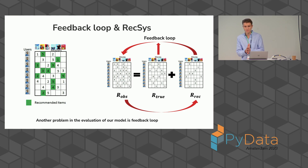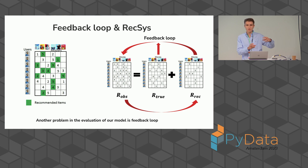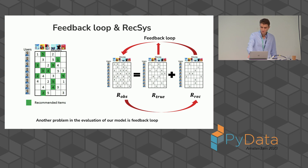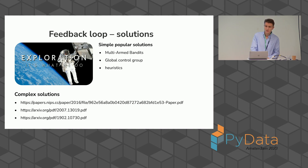Another problem when trying to reduce the gap between offline and online is the feedback loop problem in recommendation systems. We train our model on data that has a bias, because this historical data is also the output from a previous model — and it is a loop. This means we don't have the right offline metrics, because we try to predict offline history that is itself the output from previous models. We can use a global control group to reduce these effects, or use multi-armed bandits and more complex solutions.